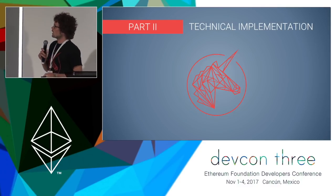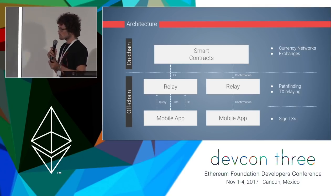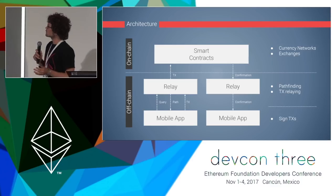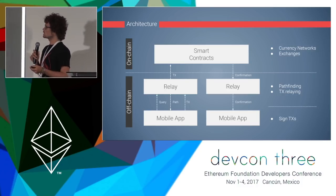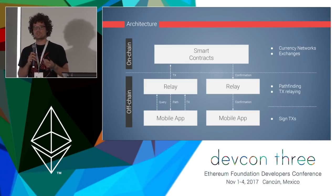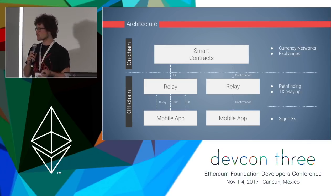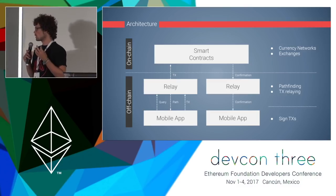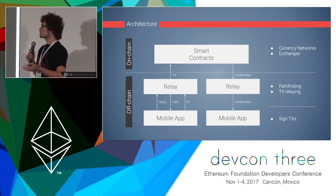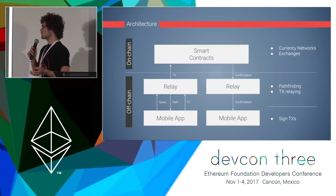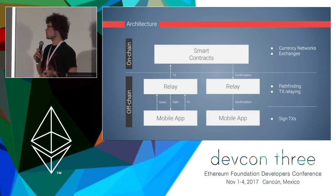Hi, my name is Bernd. I'm one of the developers behind TrustLines and I want to give you a brief overview of the technical implementation. The architecture of the TrustLines network is a three-tier architecture. At the core we have smart contracts that handle all the logic, especially the currency networks and the decentralized exchanges. As the user interface, we're developing a mobile app with a good user experience — this is where the private key will be and where transactions are signed. In between we have a middle layer called the relay service, which handles helper tasks like pathfinding.